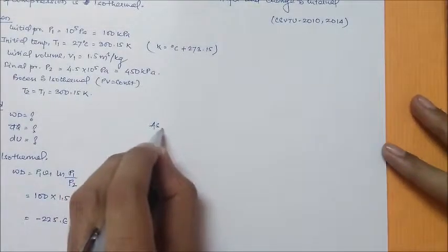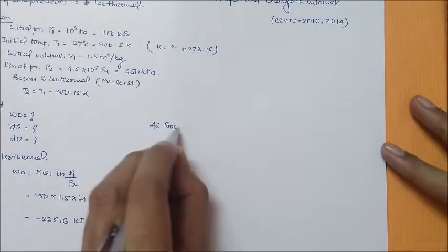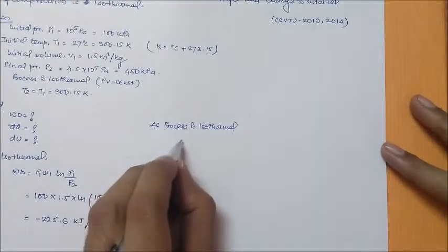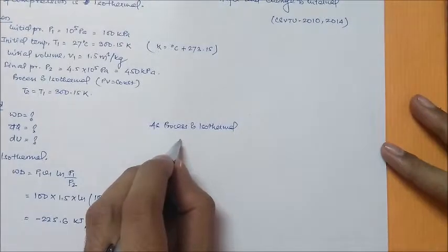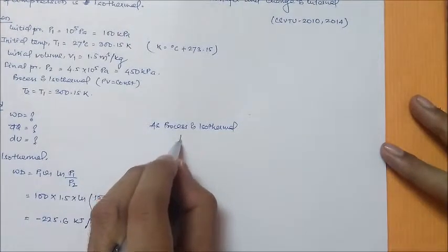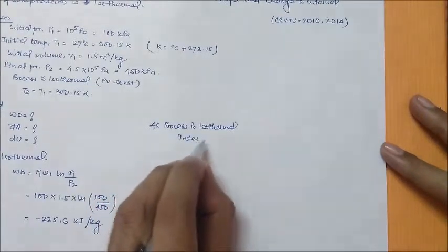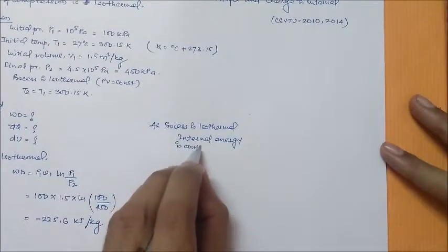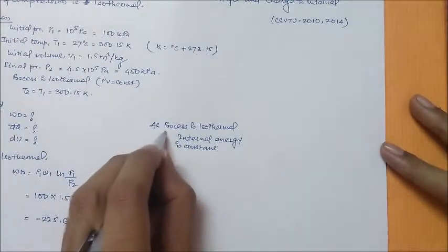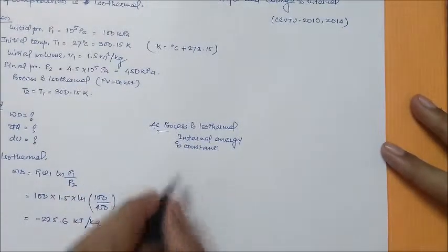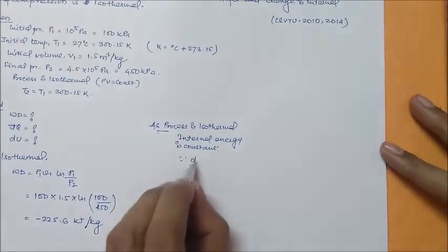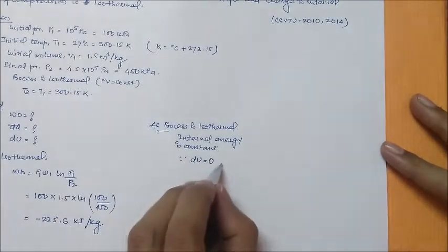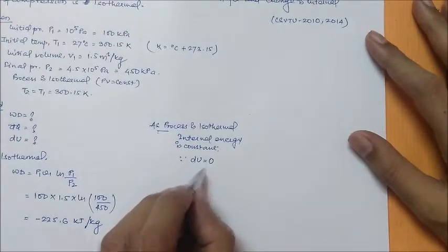As process is isothermal, internal energy is constant. That means ΔU is 0. So, the change in internal energy will be equal to 0.